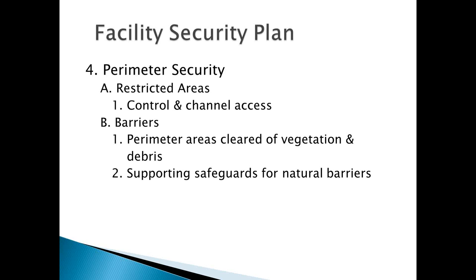You also identify who's responsible — facilities is responsible for keeping the grass cut. You want to identify supporting safeguards for natural barriers. Just because you have a river as part of your perimeter does not mean it will keep people out, so you need a roving patrol as your supporting safeguard. If you have a mountain, you'd have CCTV cameras watching it to make sure nobody is rappelling down into your facility. Use your natural barriers but also identify supporting safeguards to back those up.